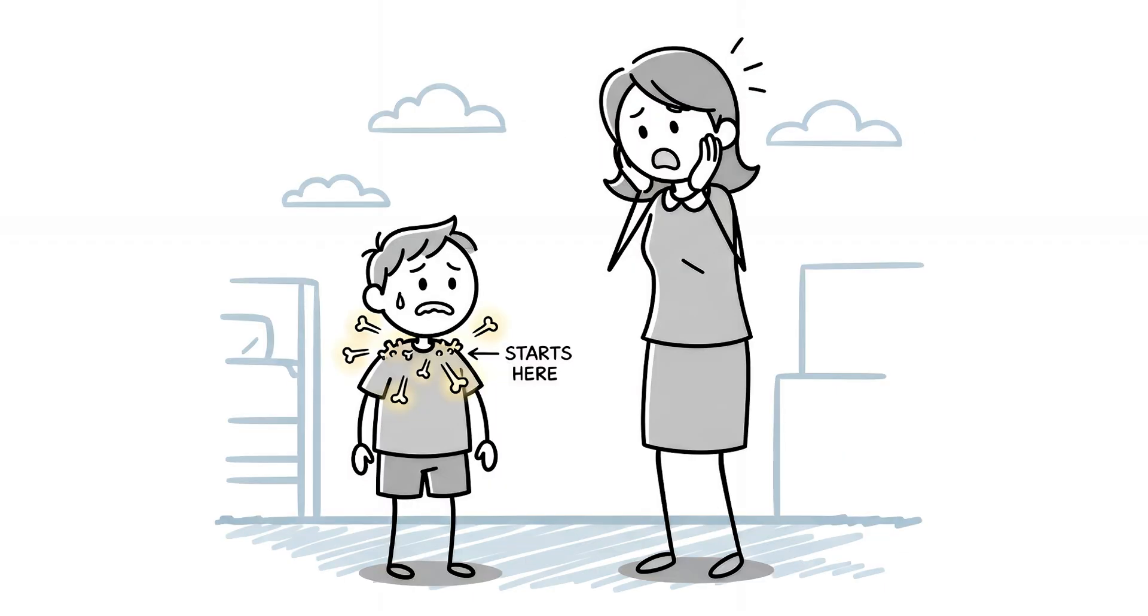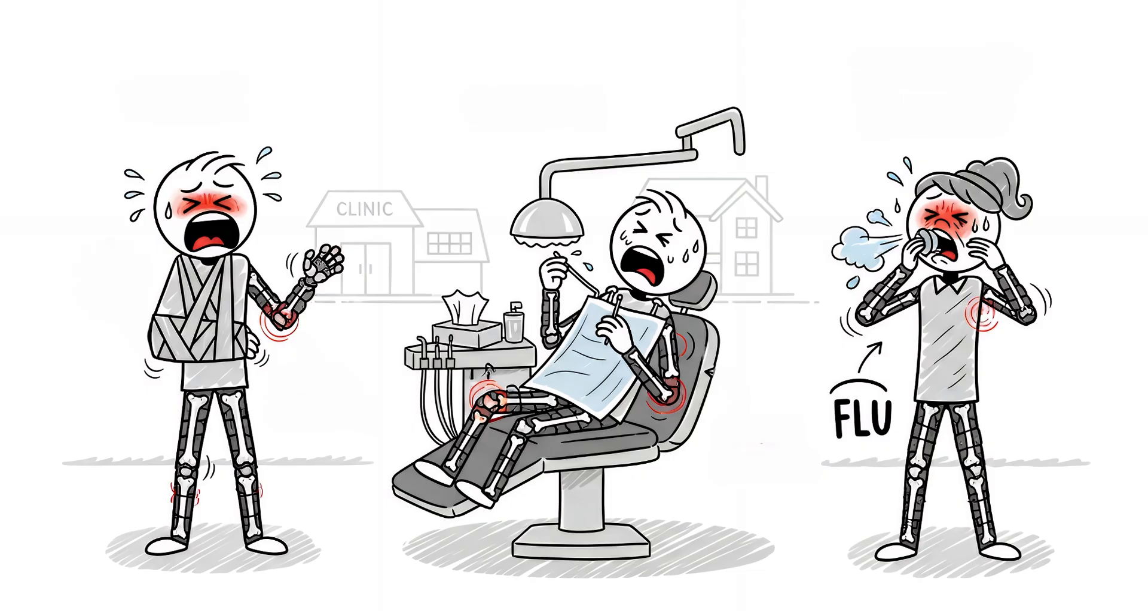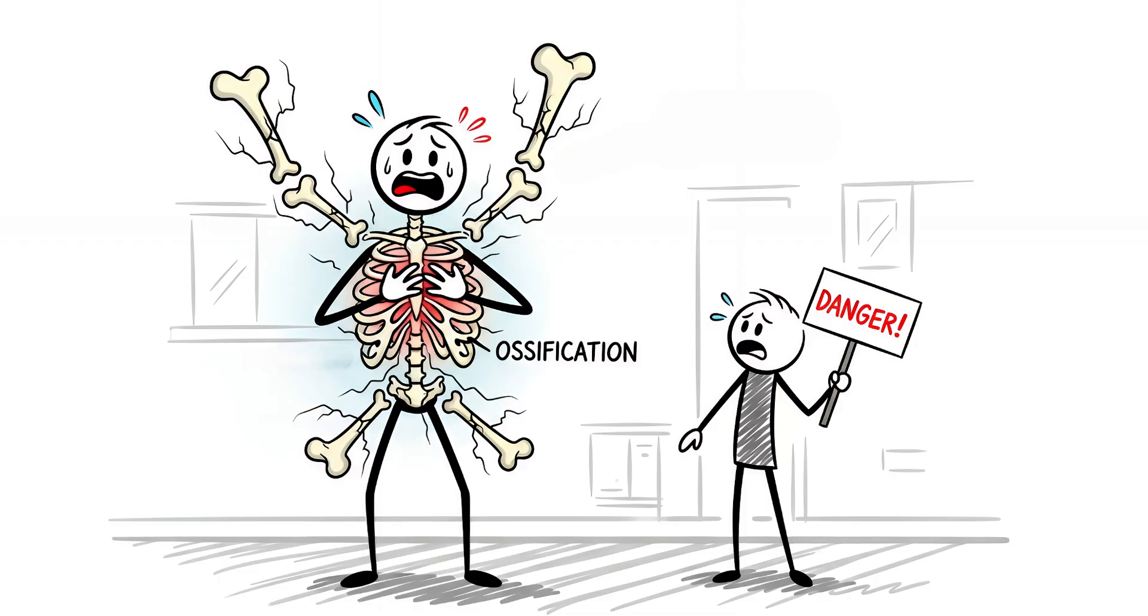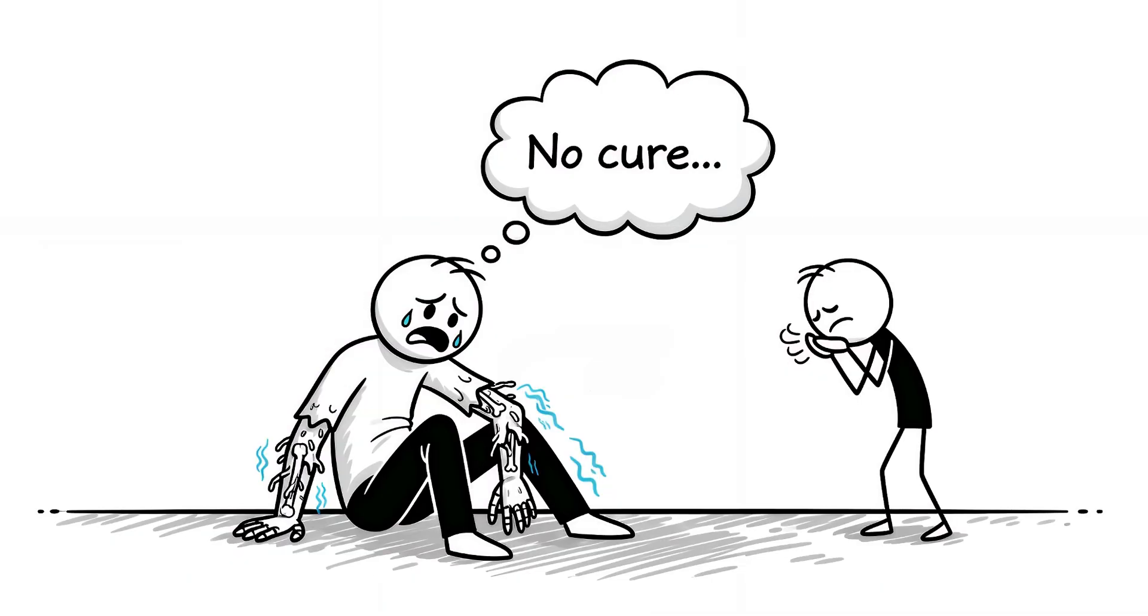It starts in childhood, usually in the neck and shoulders, then spreads downward like a wave of petrification. A broken arm, a dental cleaning, even a bad flu can trigger a flare-up that locks another joint in stone. As the ossification spreads to your chest and ribcage, you literally can't expand your lungs to breathe. Most die from respiratory failure, suffocated by their own skeleton.